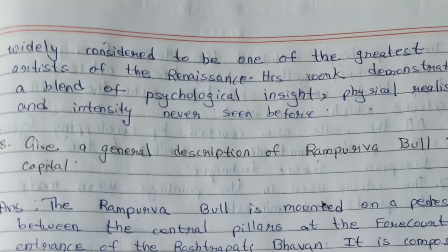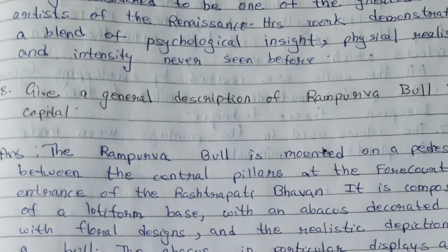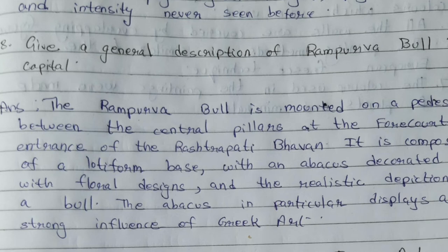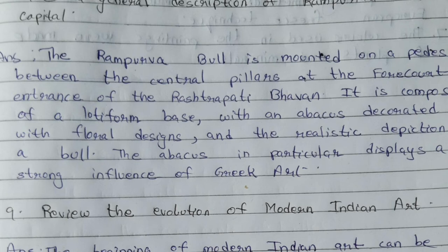Question number 8: Give a general description of the Rampura Bull capital. Answer: The Rampurva bull is mounted on a pedestal between the central pillars at the four-court entrance of the Rashtrapati Bhavan. It is composed of a lotiform base with an abacus decorated with floral designs and a realistic depiction of a bull. The abacus in particular displays a strong influence of Greek art.